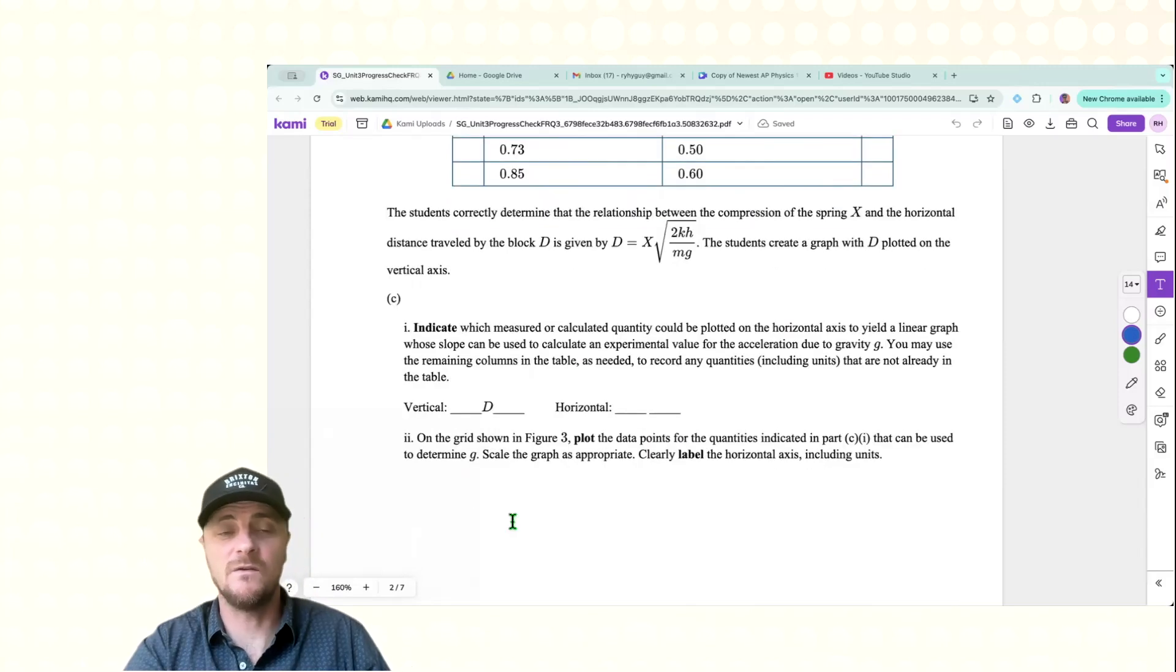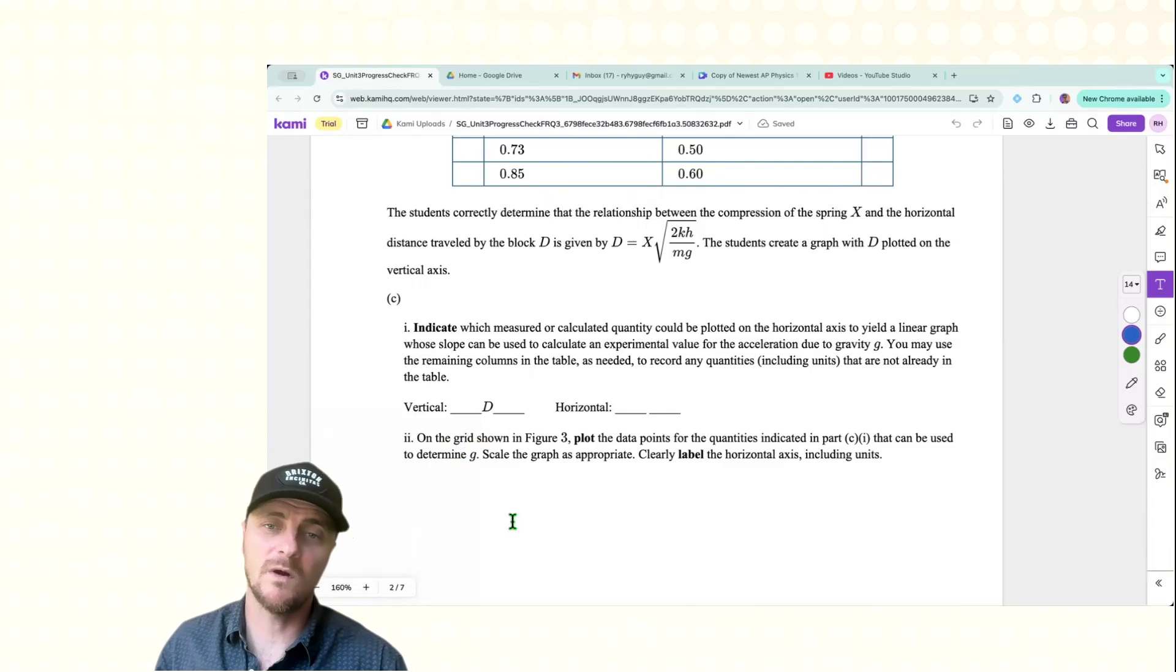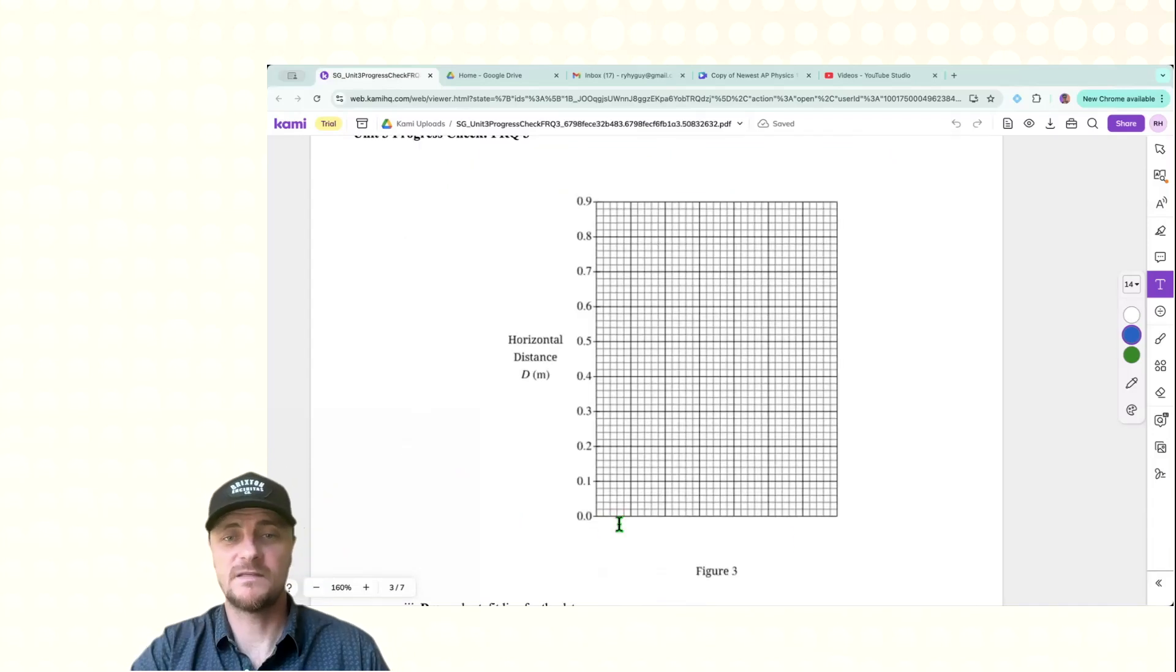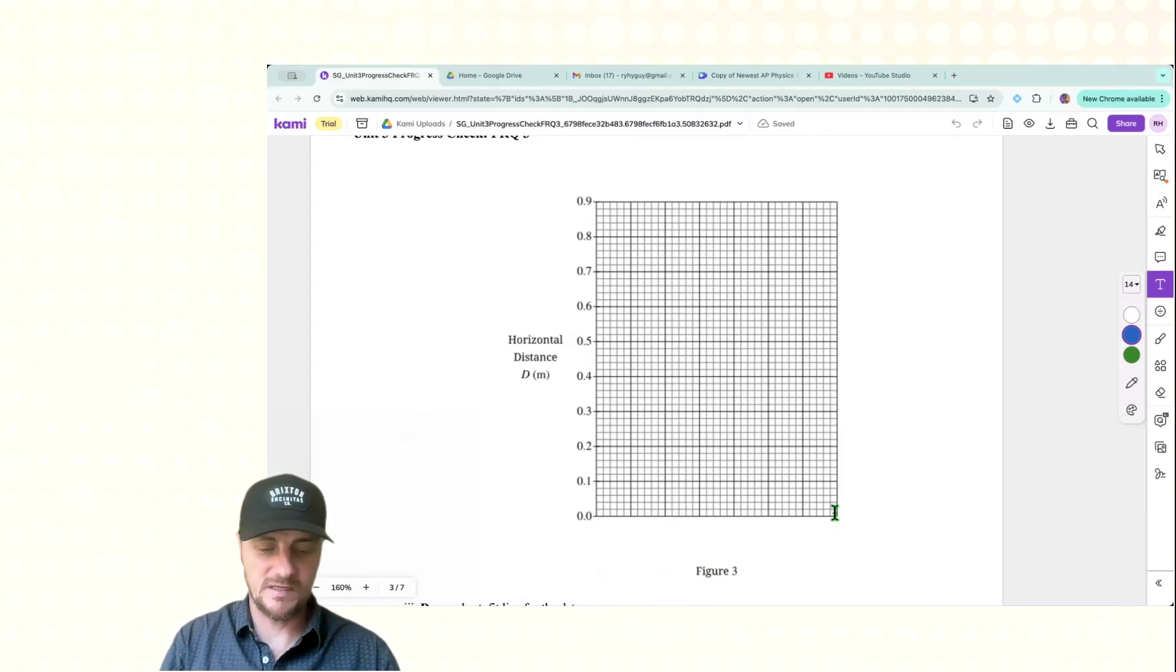Let's move ahead. So C2, on the grid shown in Figure 3, plot the data points for the quantities indicated in Part C1 that can be used to determine G. Scale the graph as appropriate, clearly label the horizontal axis, including units. It's time to scale this axis right here. It's going to be measuring X in meters. You should write that. This is 35 boxes, and our top compression distance is 0.6. So on my calculator, I'm writing 0.6 divided by 35, and I get 0.017. That's pretty close to 0.02, meaning that each one of these little boxes will be worth 0.02.